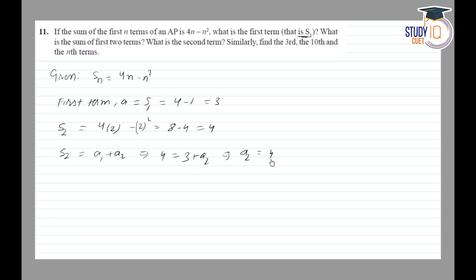So we have a2 value now. Similarly find the third, tenth and nth term. Now I know a2 and I know a1, the first term. So can I find the common difference?